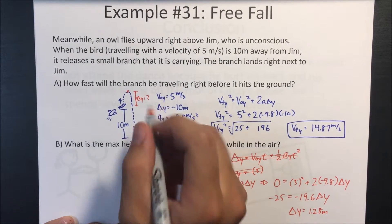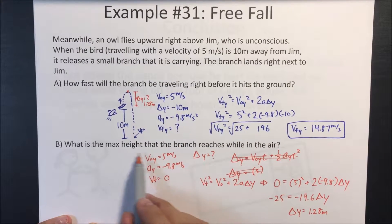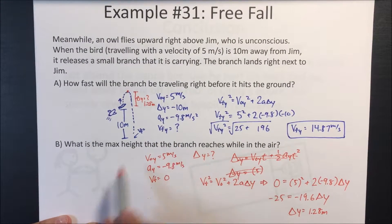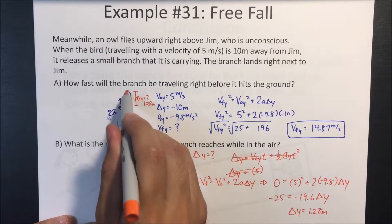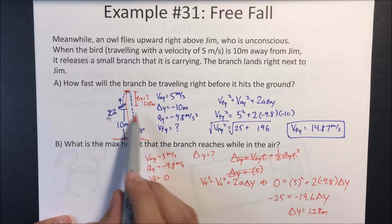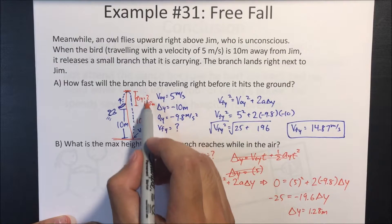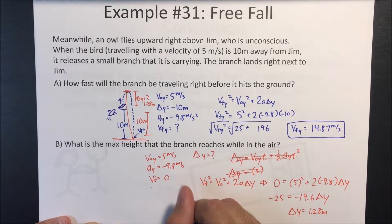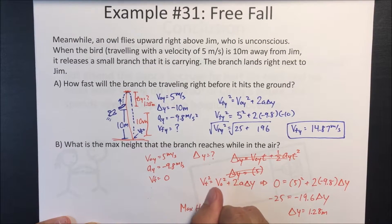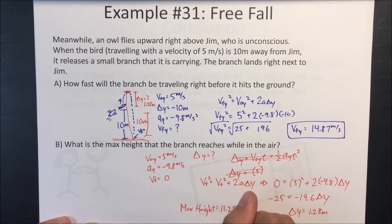However, the question asks for the maximum height from the ground. We know the release point is 10 meters above the ground and the branch travels an additional 1.28 meters upward. So the maximum height equals 10 plus 1.28 meters, which is 11.28 meters.